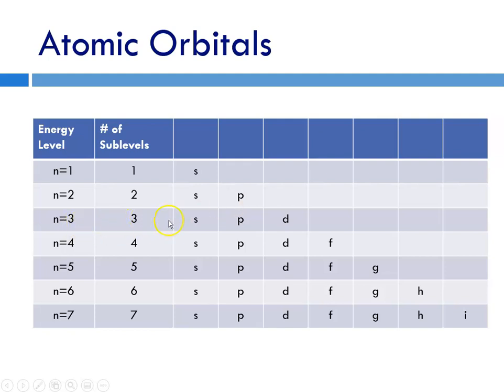At N equals 3, there are three possible sublevels, S, P, and D. At 4, S, P, D, F, and so on and so forth. So for now, I thought I would show you a visualization of what these orbitals look like.